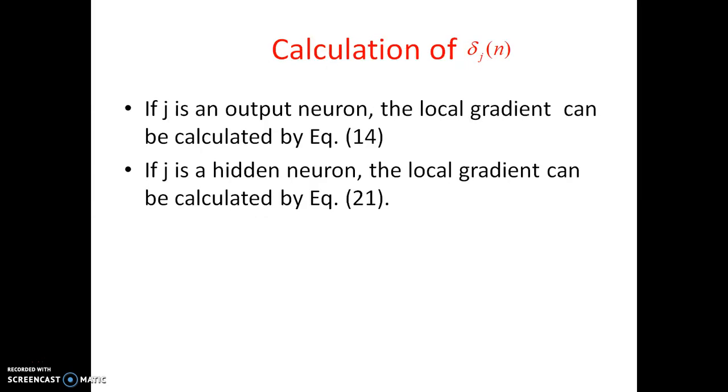So this is the thing for weight upgradation. And the calculation of delta j of N is again, as we already discussed, there are two types. One is, if it is an output layer, let's use equation 40 for delta j of N. If it is a hidden layer, we need to use equation 21. So that's the condition.